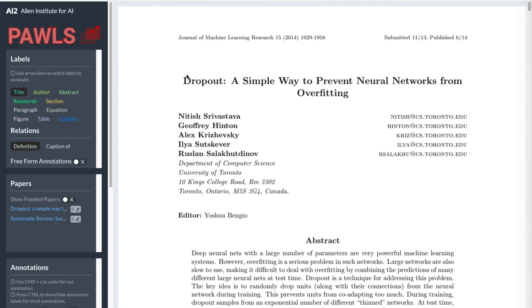To use PAWLS for labeling, simply drag a bounding box for the text on the labeling canvas. The PDF document is rendered with its original layout on the labeling canvas, so what you label is what you get.